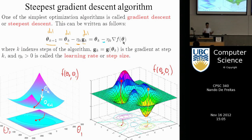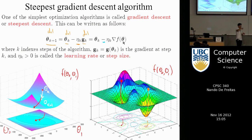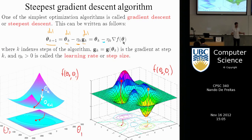If we have a quadratic function we will get to the minimum, provided we have the right step size. If your step size is just a constant number, and it's too small, you might just get stuck going down very slowly. Think of the step size as how much strength you're putting in to go down — it determines how fast you descend.